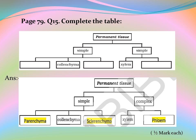Page 79, Question 15: Complete the table. Answer: Permanent tissue is divided into two types — simple and complex. Simple tissue is further divided into parenchyma, colenchyma, and sclerenchyma. Complex or compound tissue is divided into two: xylem and phloem.